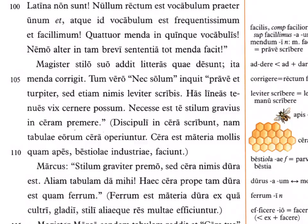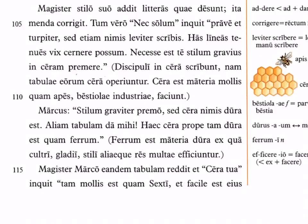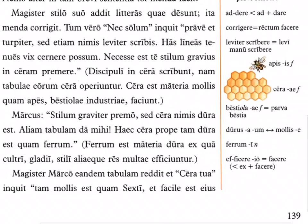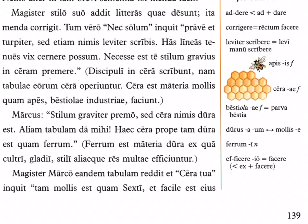Marcus also writes too lightly — he's not pressing in hard enough. 'Vix possum has lineas graciles videre' — I am scarcely able to see these thin lines. It's necessary to press the stylus more heavily into the wax. The students are writing in wax, 'in cera scribunt,' for their tablets are covered with wax, 'cera operiuntur.'